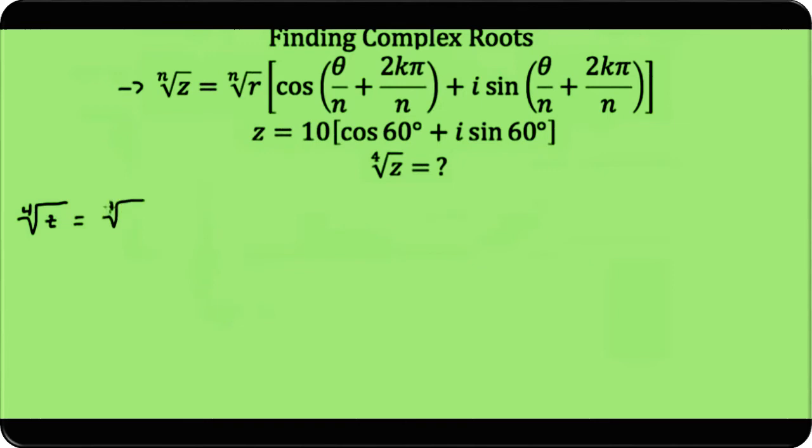the fourth root of r, which is 10, times cosine of (θ/n), which is 60° divided by 4. Now I'm not going to use 2kπ; I'm going to use 360° because we're measuring our angle in degrees. So plus 360k, which for our first solution is 0, over n, which is 4,